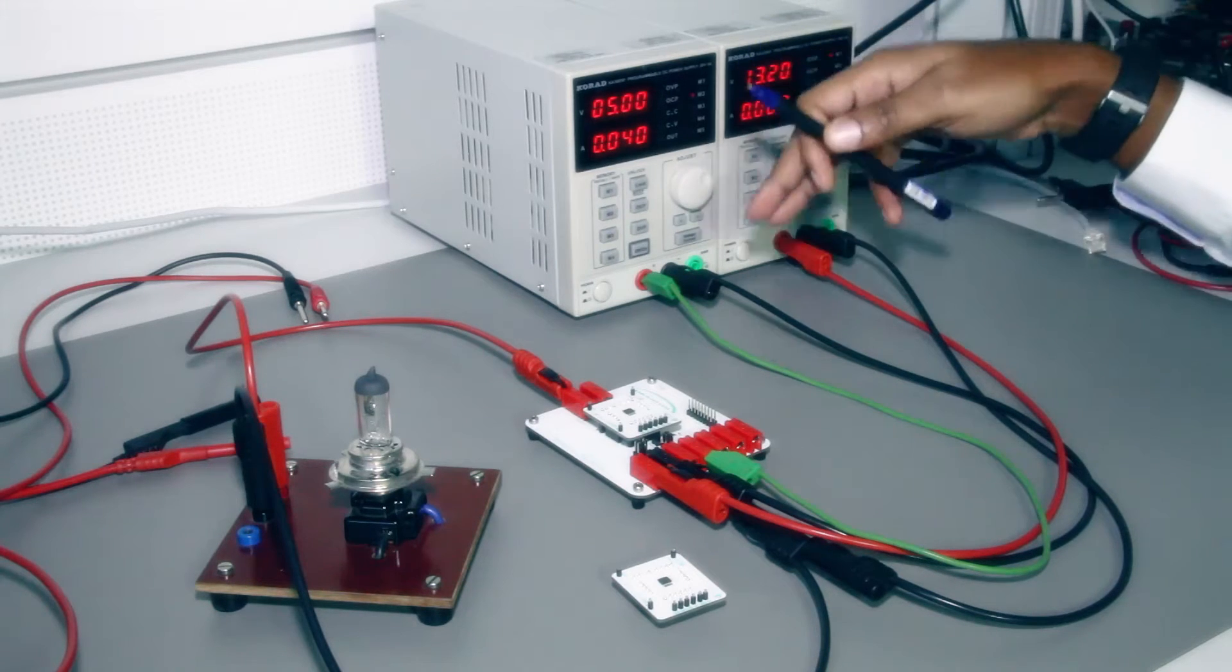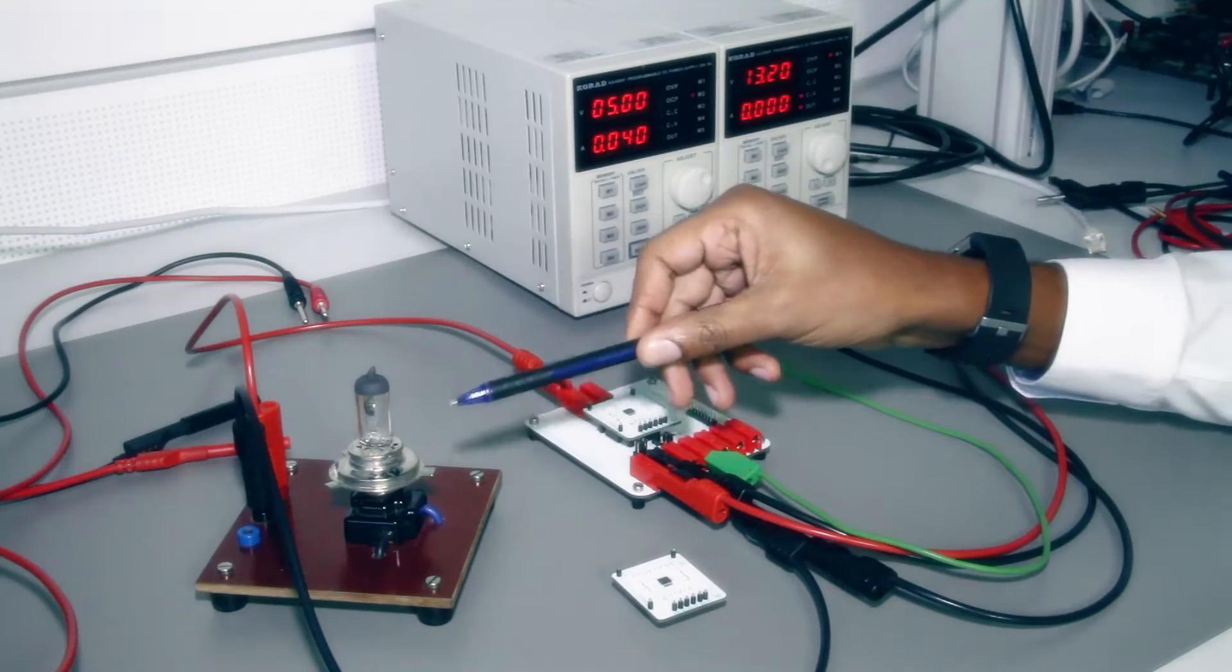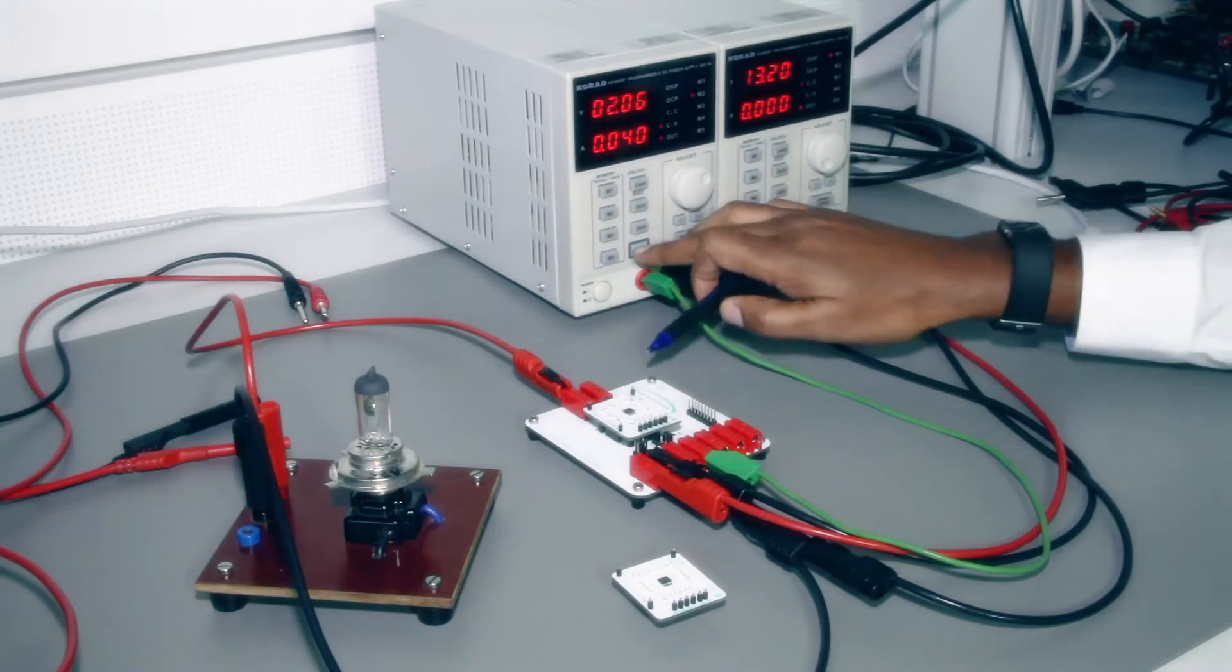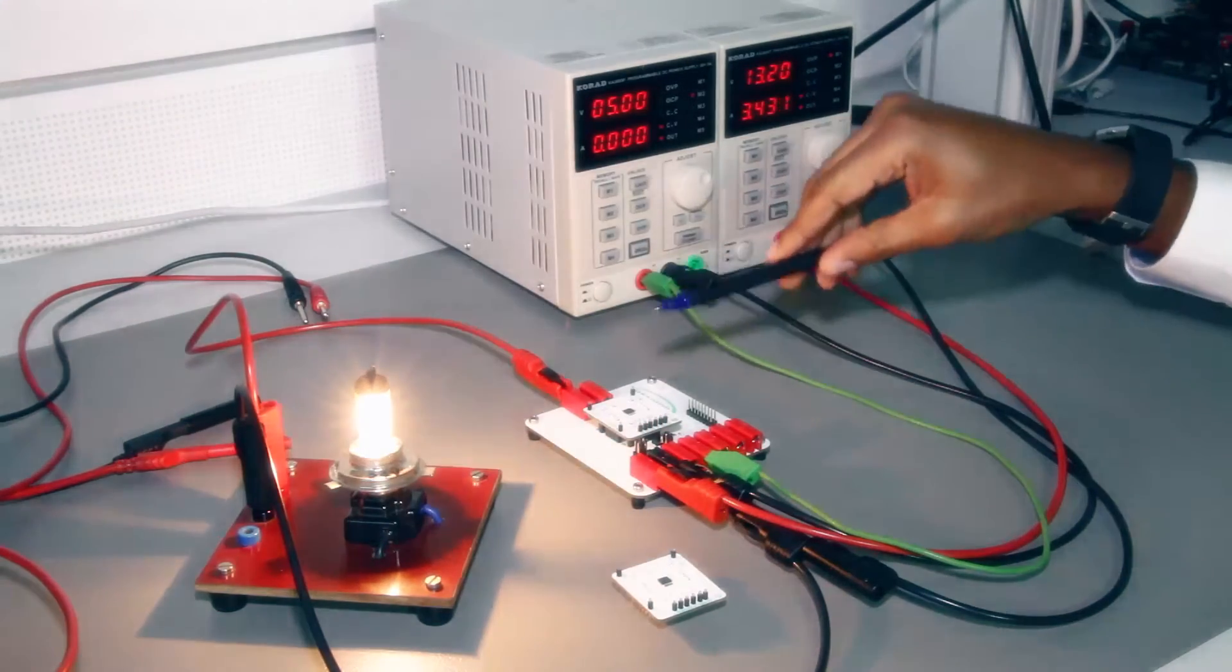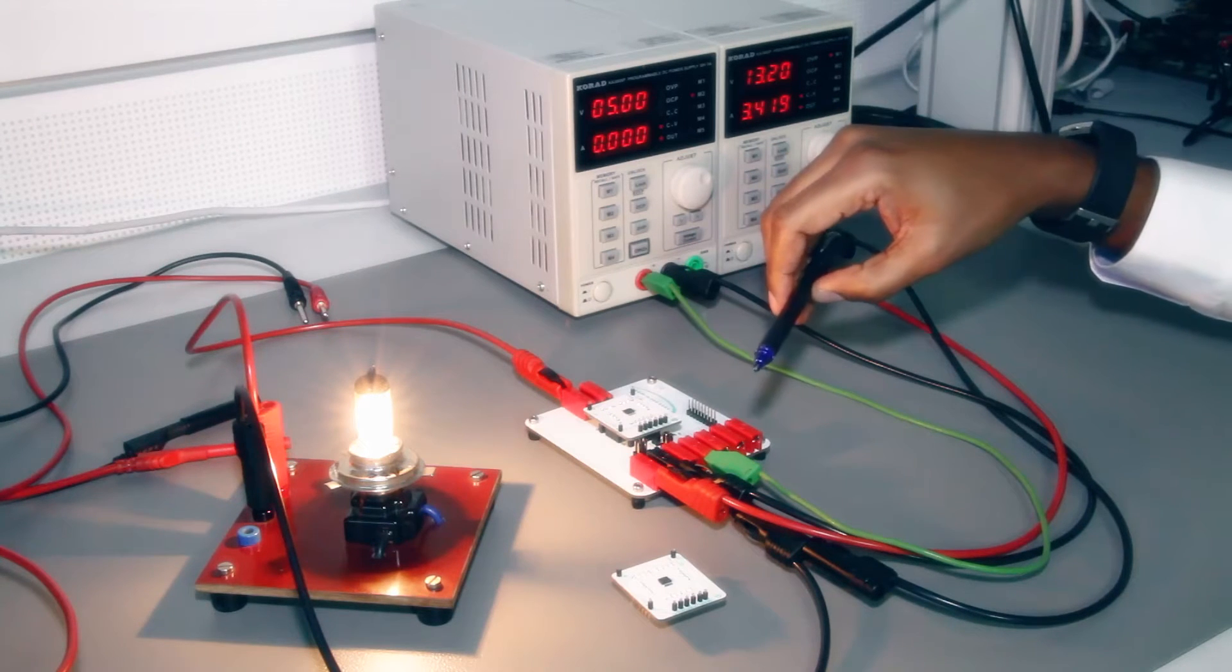To demonstrate that this device can actually turn on a 55 watt lamp, we just need to turn it on and you can clearly see that the small demo device can actually turn on the device.